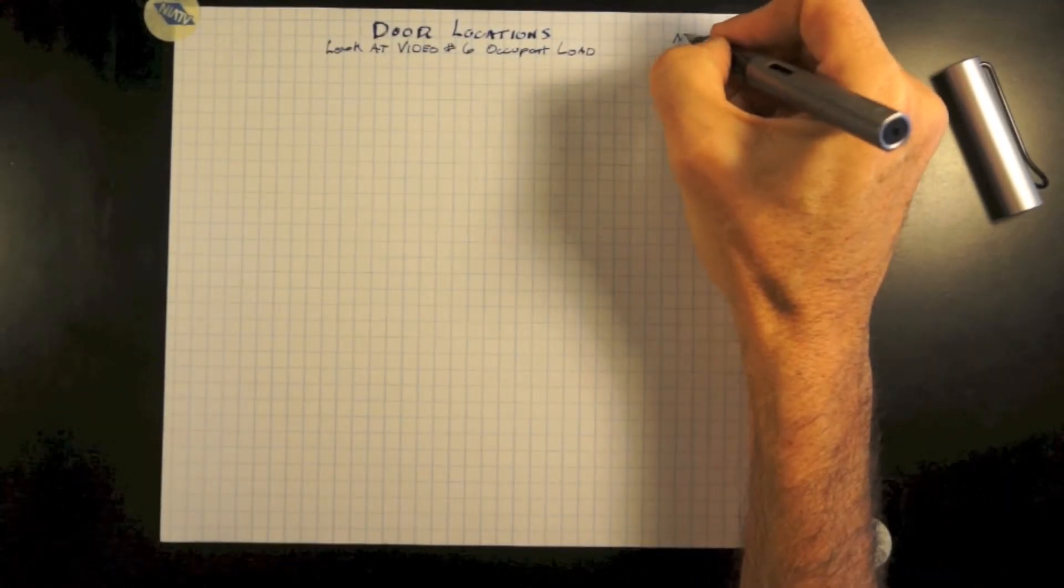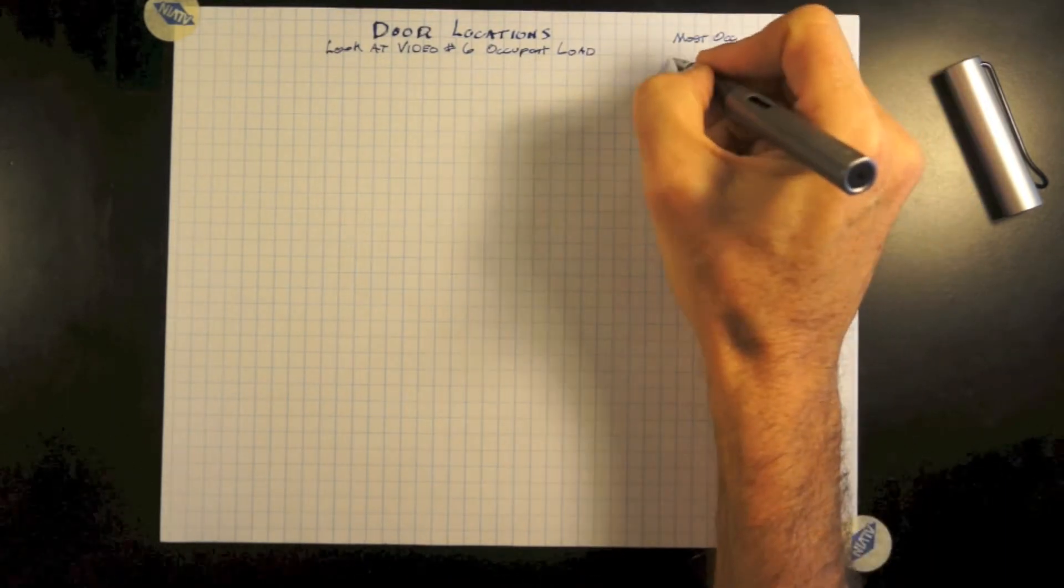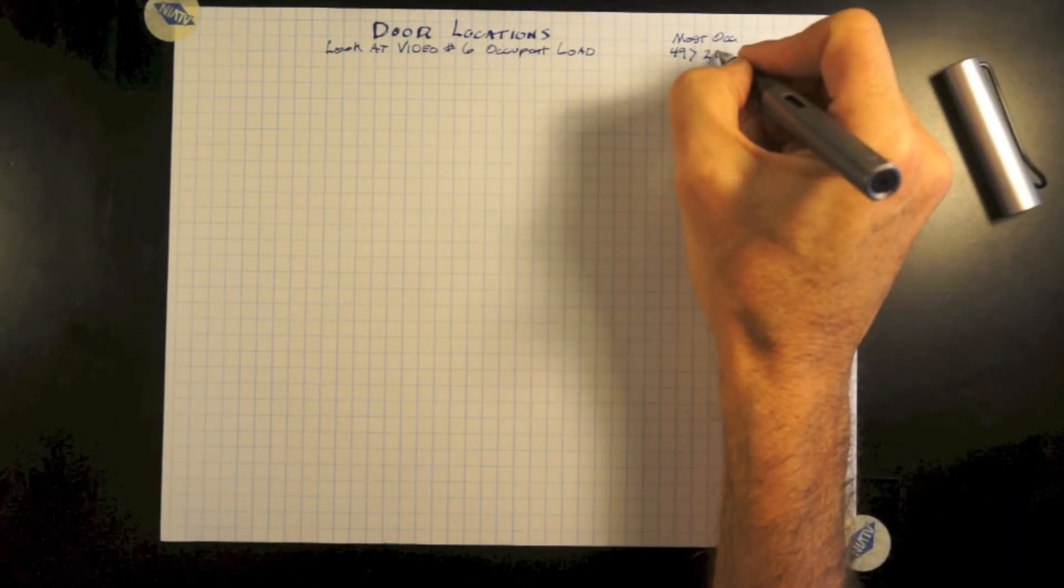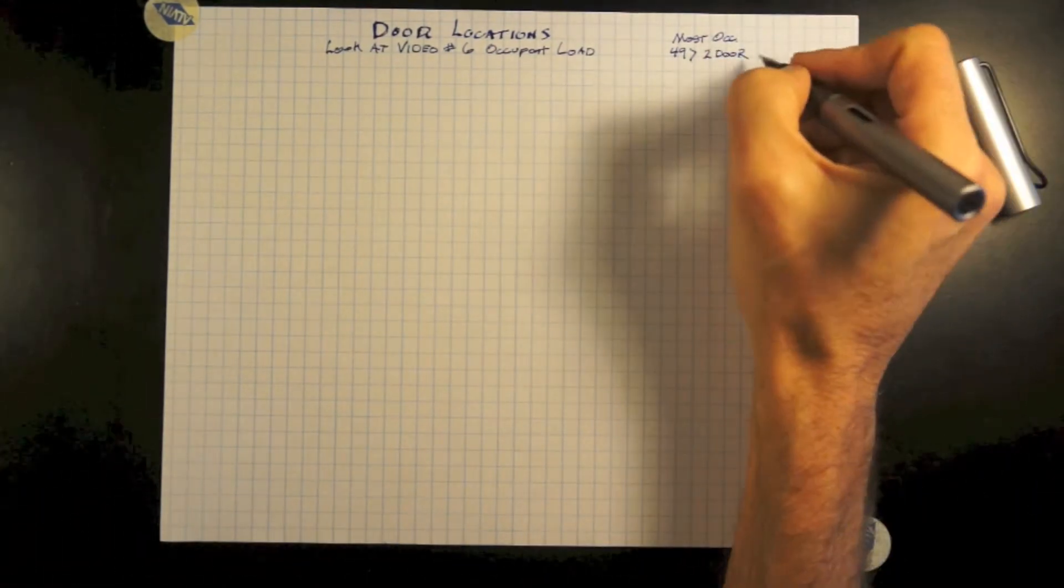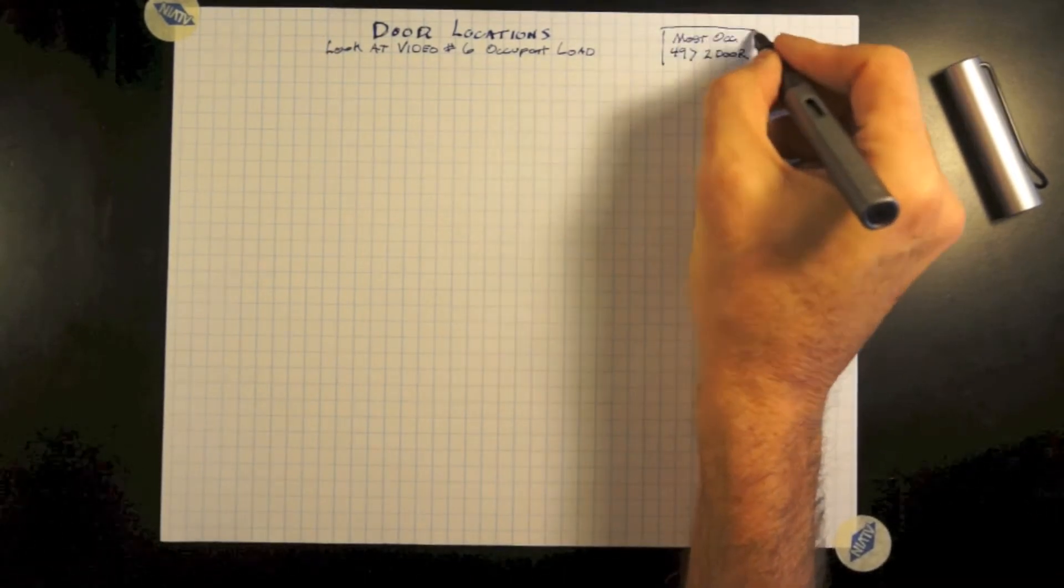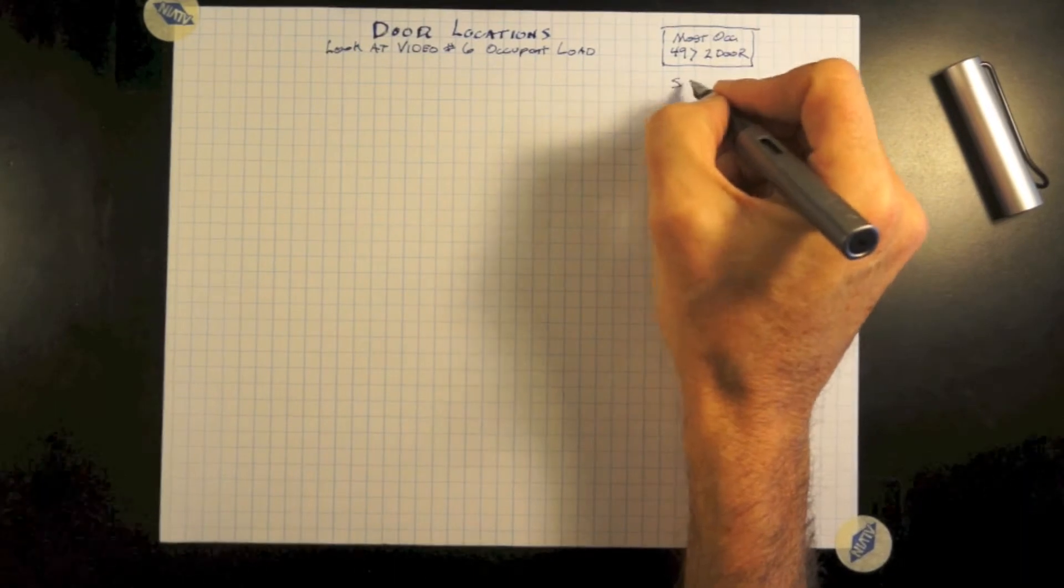Door locations within a space and or room. I would suggest you review video number six to understand occupant load to where more than one door would be required. Most occupancies, once you reach 49 and above persons, two doors will be required.